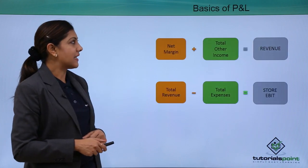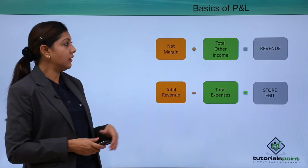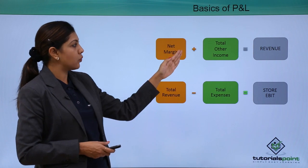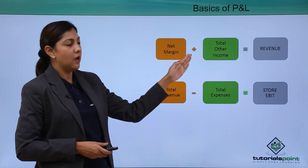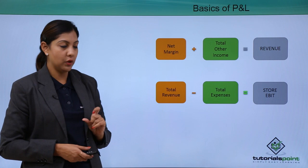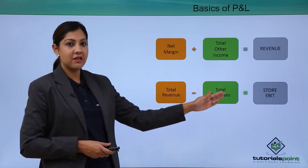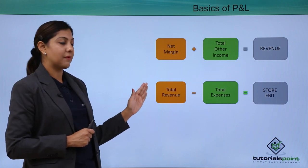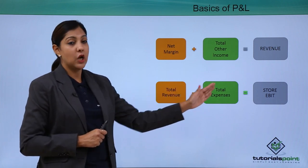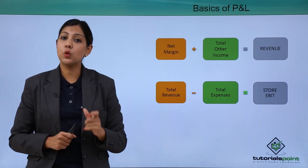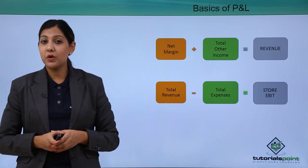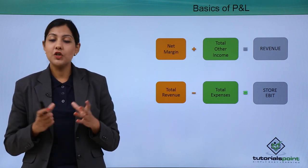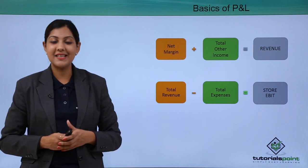To calculate revenue, the net margin is added to other total income. To find the store EBIT — Earnings Before Interest and Tax — you calculate: Total Revenue − Total Expenses = Store EBIT. This is very important in order to know how much profit you are making or how much loss you are incurring, so you can put in the right kind of efforts to overcome losses and make profits.